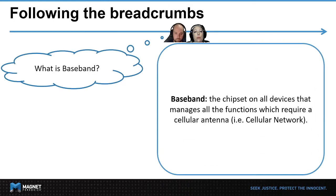You may have noticed on the previous slide there were functions that included the word 'baseband.' Looking further into this, we discovered it refers to the standalone chipset on the device that manages all cellular network functions — i.e., the modem and cellular data. iOS uses this to have another time reference that is unmanipulated by the user. However, not all devices have baseband chips, which is why it cannot be the only source of truth, but is stored for reference.